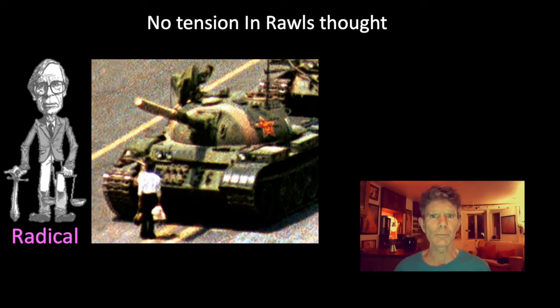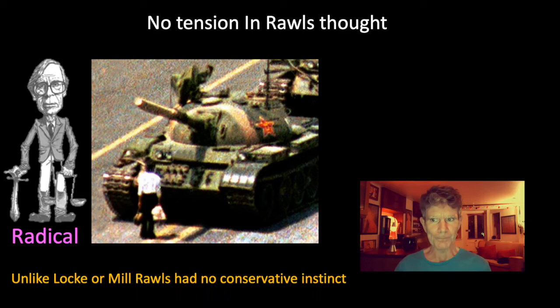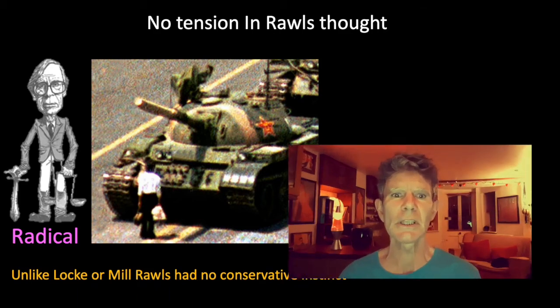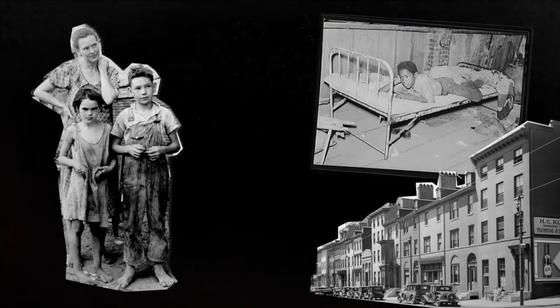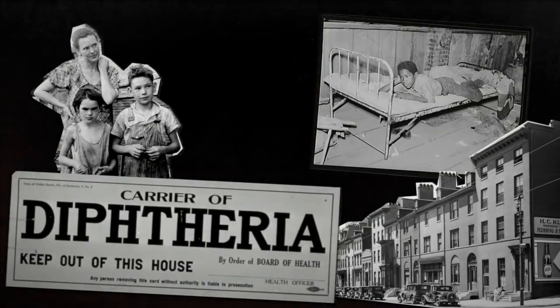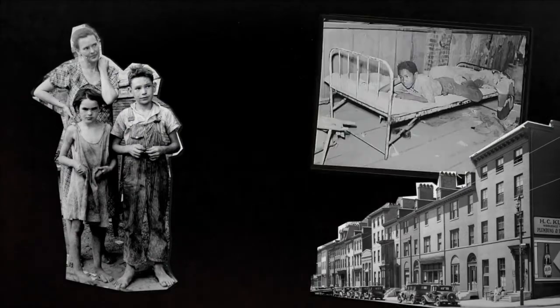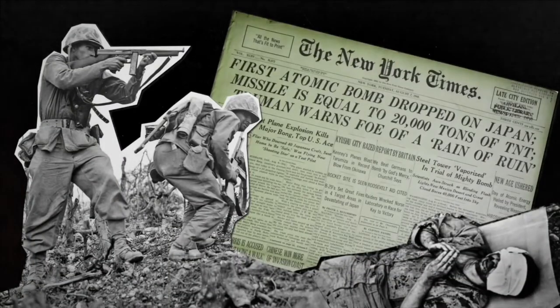One of the reasons why Rawls was a radical was because of his upbringing. He's a really good example of someone whose thinking is shaped by his time and his own experiences. He was born in 1921, and from a very early age he had a strong sense of the unfairness, or even the cruelty, of life. As a child, two of his brothers died from an illness that he unwittingly transmitted. As a boy, he witnessed the poverty of America's Great Depression. And as a man, he witnessed the horror of the Second World War, and in particular the aftermath of the atom bomb on Hiroshima, which he saw firsthand. These experiences really shaped his thinking.